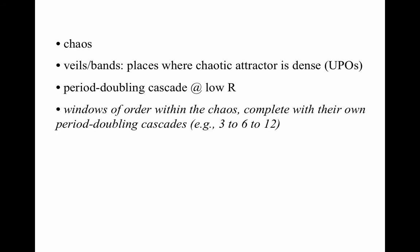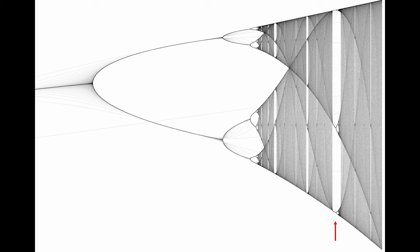You may remember in the very first segment of this course I showed you the title page of a paper called Period 3 Implies Chaos. The fact that there is a period-3 orbit in this map is very significant. If people are interested, I can record an auxiliary video about that.